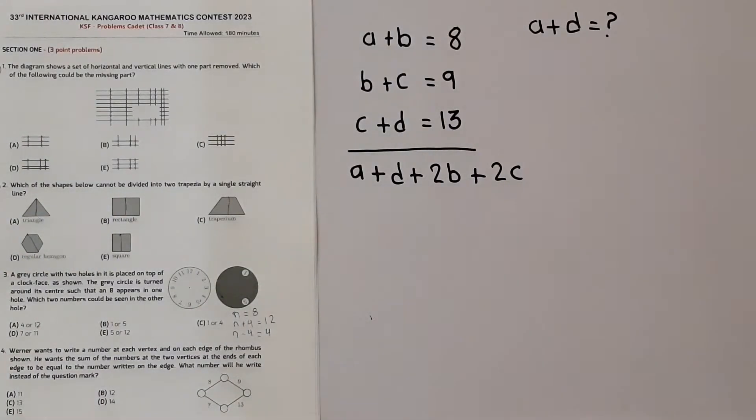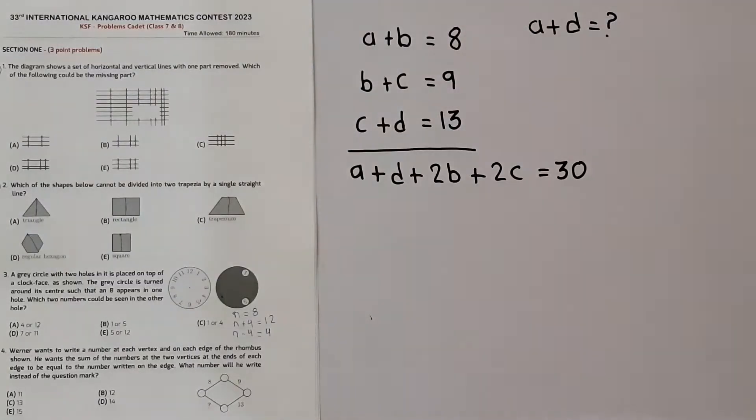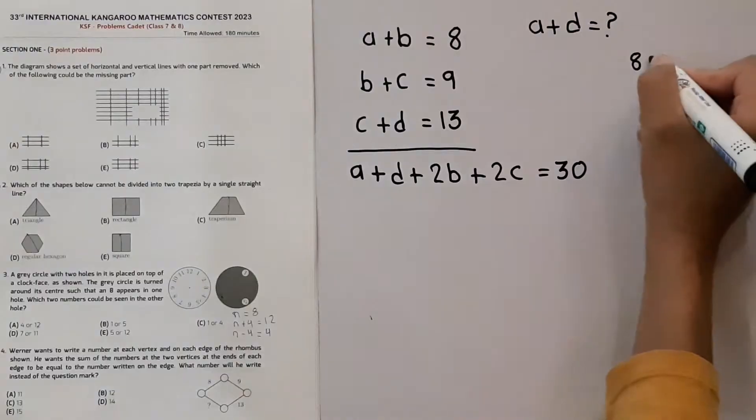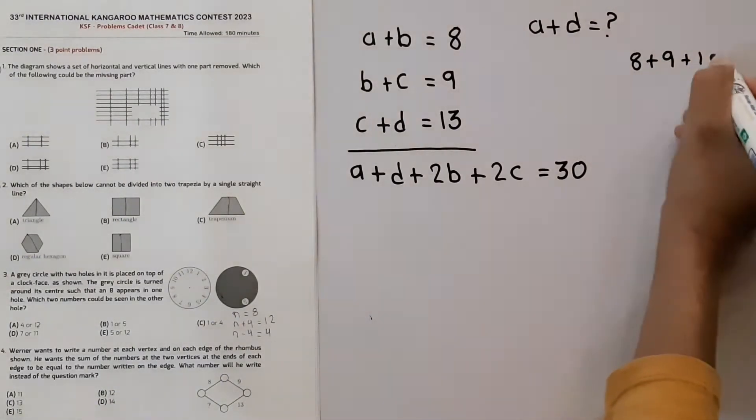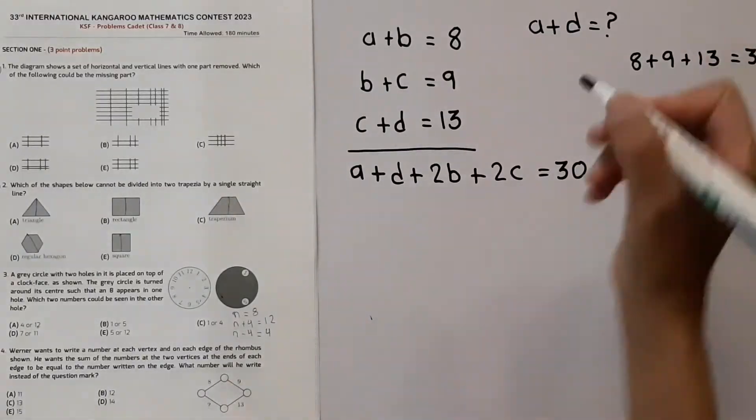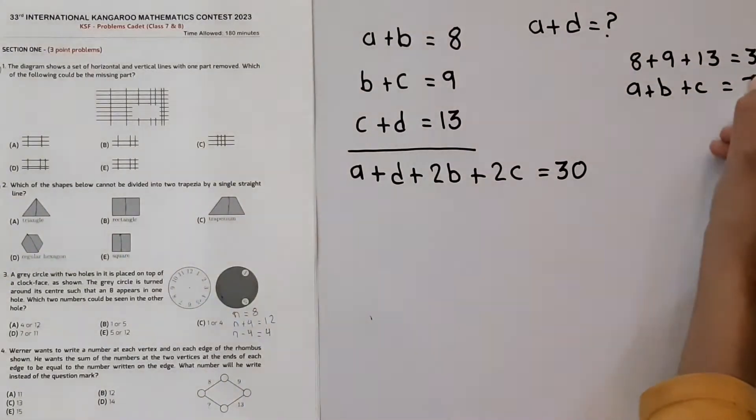Now we have A plus D plus two B plus two C, and this is equal to 30. This is equal to 30 because 8 plus 9 is 17, and 17 plus 13 is equal to 30. It means A plus B plus C is equal to 30.